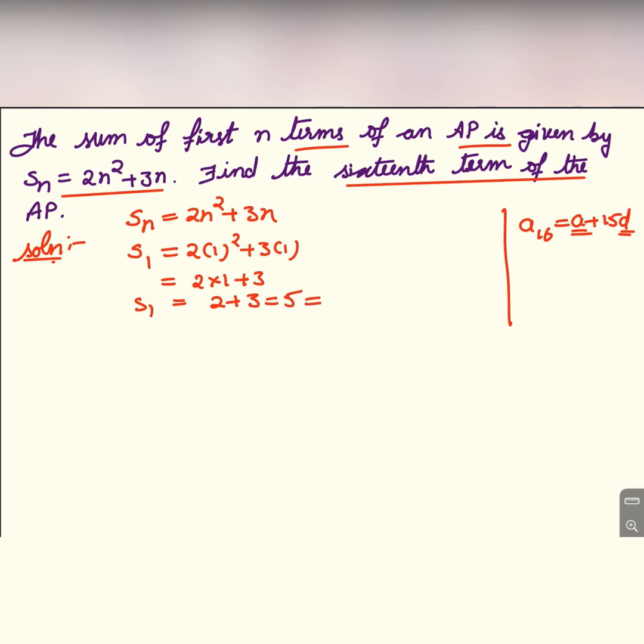And now let us find out S₂. S₂ = 2(2)² + 3(2) = 2 × 4 + 6 = 8 + 6 = 14. Now S₂ is sum of first two terms, a₁ + a₂.